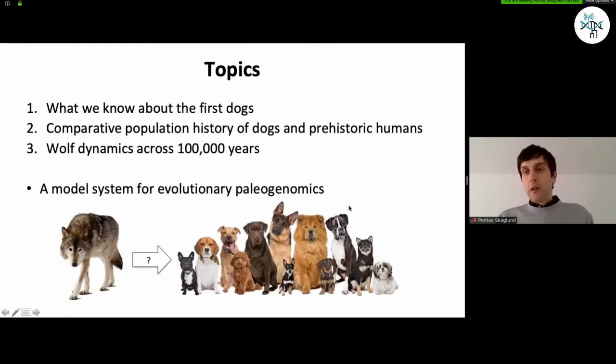And so the sort of things I hope you will come away with after this talk is a little bit about what we know about the first dogs. And so spoiler alert, I won't be able to tell you where dogs originated. I think we don't know that yet, but I'll tell you why I think we don't know that yet. And I'll be able to tell you something about, I think we're really starting to home in at least on the time when dogs originated. We'll talk about this comparative population history of dogs and particular prehistoric human groups, as well as some of our work that's getting going now on wolf dynamics across a hundred thousand years, really exciting data set that's building up of genomes from across this time period.